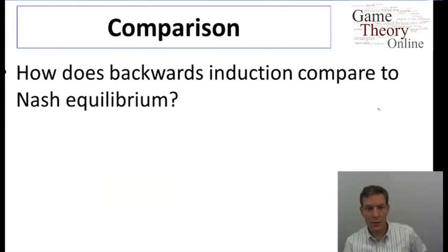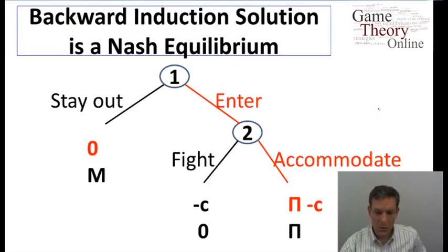Let's have a look at how the backward induction solution compares to Nash equilibrium. When we looked at the backward induction solution, it said enter and accommodate. That is a Nash equilibrium, right? If firm 1 enters, firm 2 is best responding, accommodating is the best response. If firm 2 would accommodate at this node, then firm 1 entering is the best response. So it is picking a Nash equilibrium.